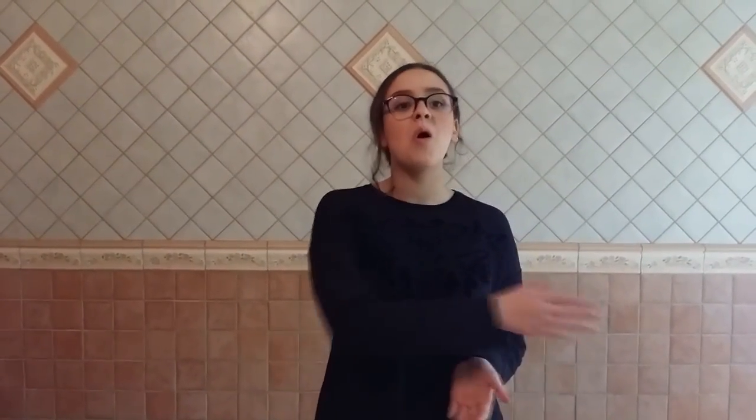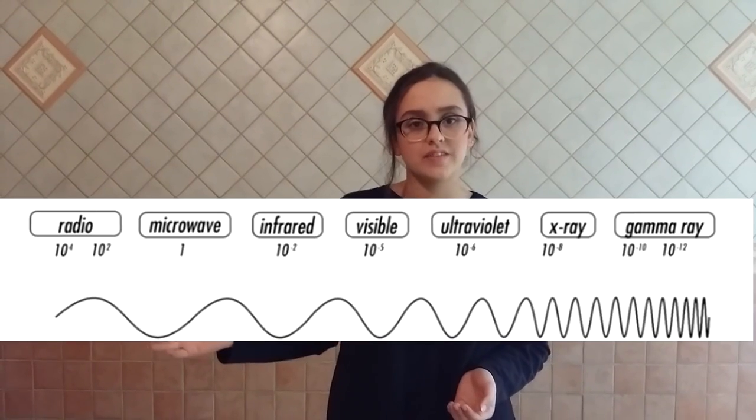We just happen to have evolved eyes that have an interesting way of detecting energy — it's called color. The colors we know are nothing different from all the other electromagnetic waves; it's just the part of the spectrum that our human eyes detect. So red is light hitting our eyes that has the longest wavelength. Violet is also light hitting our eyes but it has the shortest wavelength. Other colors in between have intermediate wavelengths.